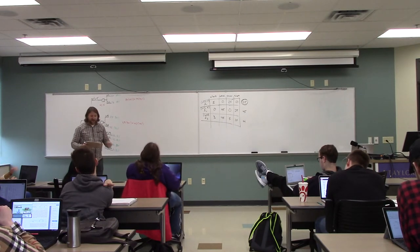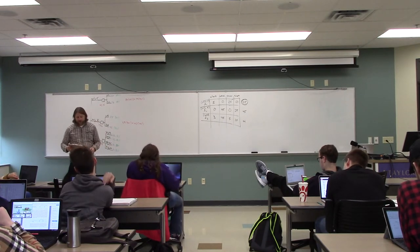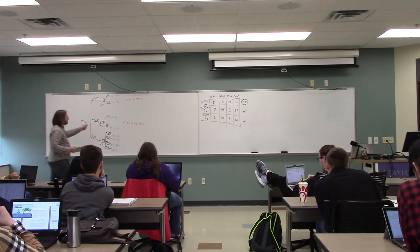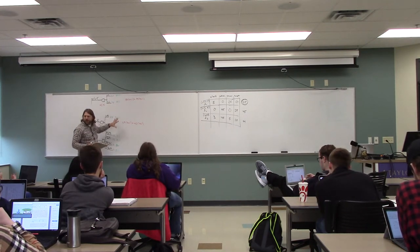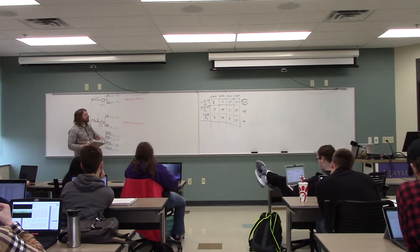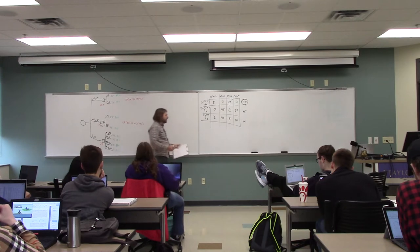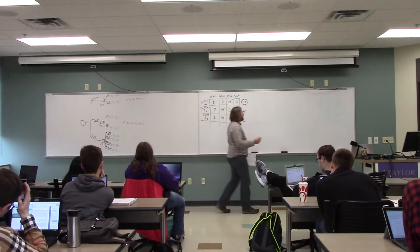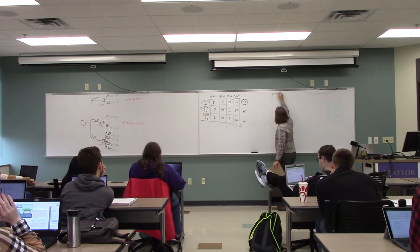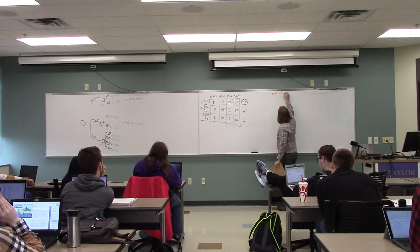I'm going to skip over questions D and E, because they were just a matter of changing some of these percentages. I think if you got this, you could get those pretty straightforwardly. But what I want to talk about now is a concept that will end up being the cost of perfect information.